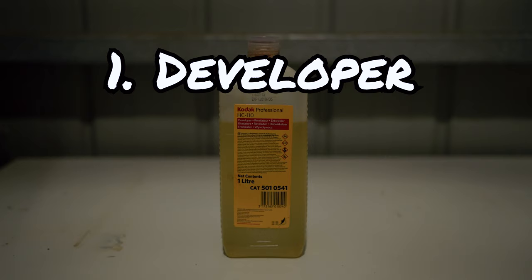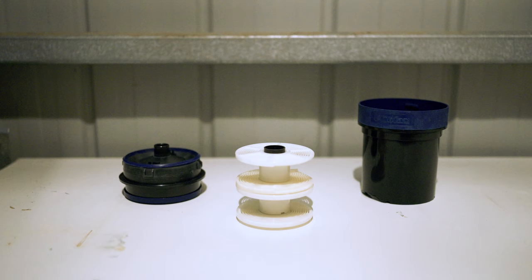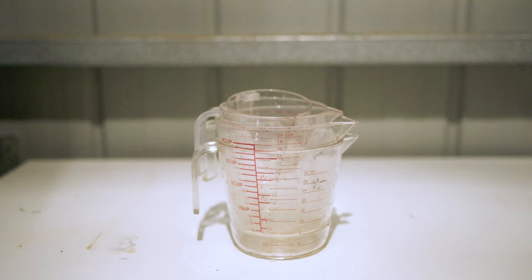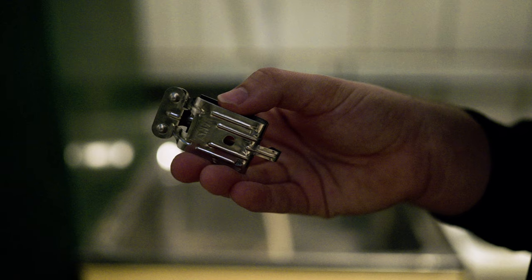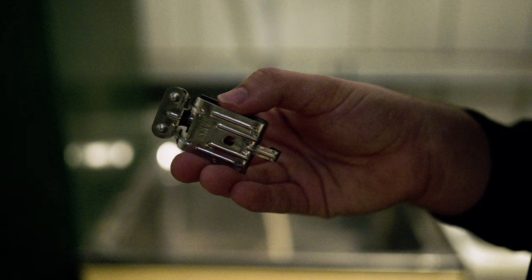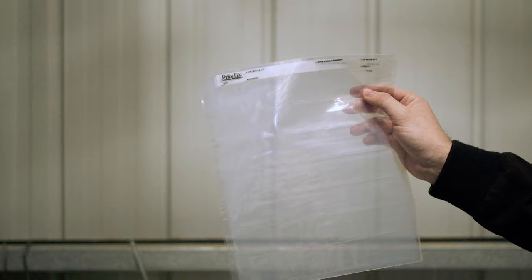Starting off with the process, there's three basic chemicals that you'll need: a developer, a stopper, and a fixer. You'll also need some additional equipment to go on with this process. You'll need a developing tank, a dark bag or dark box, a cloth, a thermometer, some photo flow, some measuring equipment, scissors, a peg or some clips to hang the film on, a bottle opener, some negative sleeves, and finally some storage for the negatives.